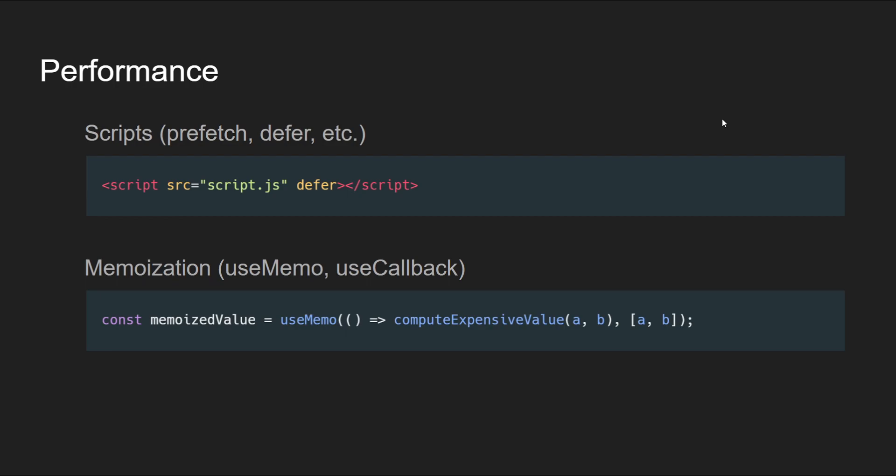For scripts, strategies like prefetching resources for future navigation and deferring non-critical script loading until after the initial render improve page load time and user experience. Next is memoization. In React, this specifically relates to the useMemo and useCallback hooks, but it can be extended to JavaScript using normal memoize functions. Memoizing prevents unnecessary recalculations and re-rendering, boosting performance especially in components with complex computations.